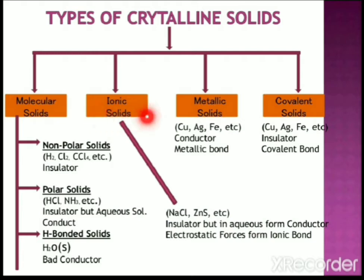In ionic solids, ions are the constituent particles. Such solids are formed by the three-dimensional arrangement of cations and anions bound together by strong electrostatic forces. Examples include NaCl and zinc sulfide crystals.